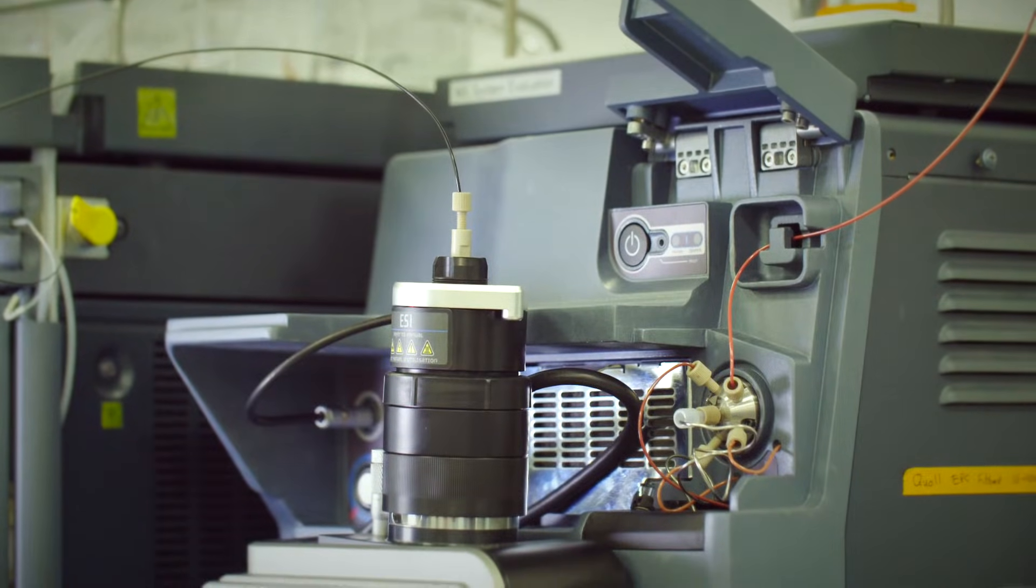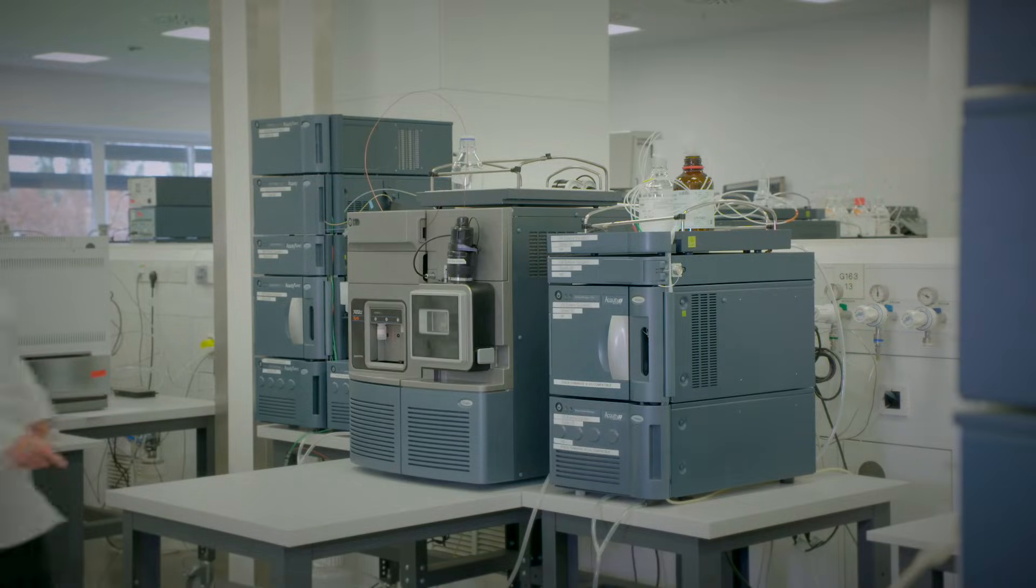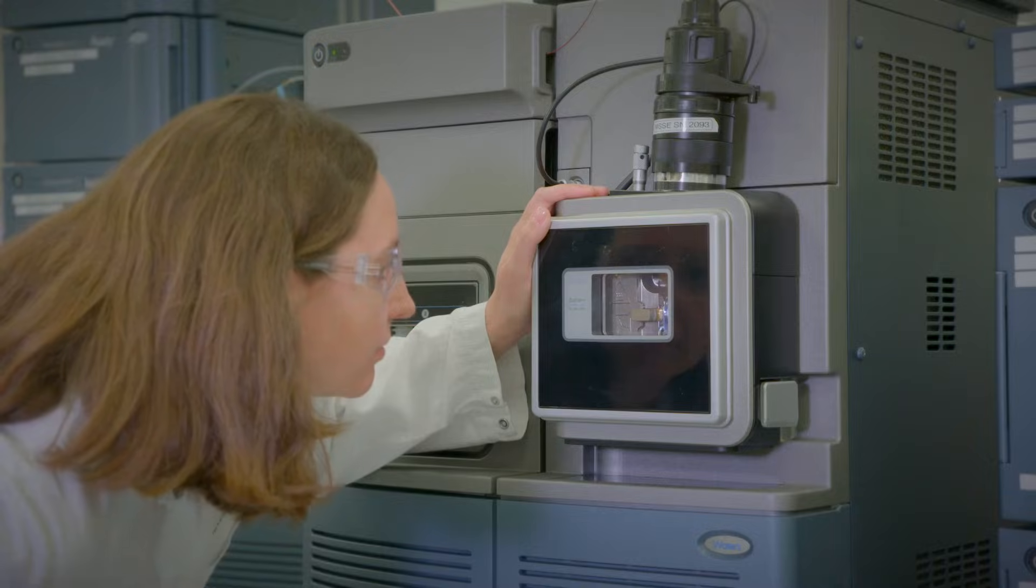In an ESI ion source, a narrow metal capillary is held at high voltage and a potential difference is produced between the capillary and the orifice of the mass spectrometer.